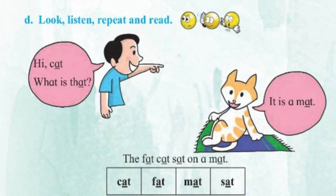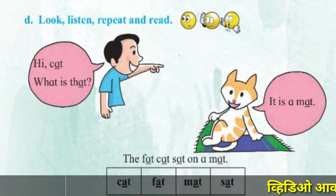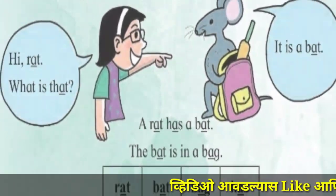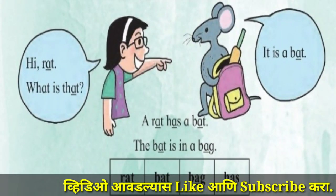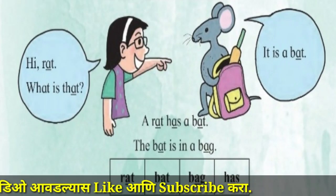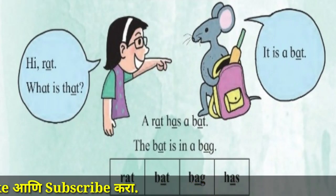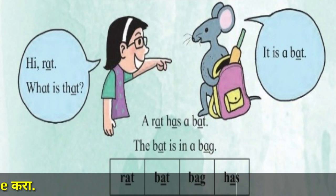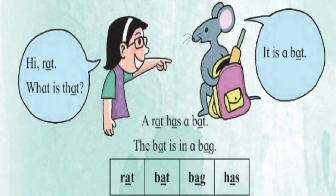What is cat, fat, mat and sat? Hi rat, what is that? It is a bat. A rat has a bat. The bat is in a bag. What is rat, bat, bag, has?